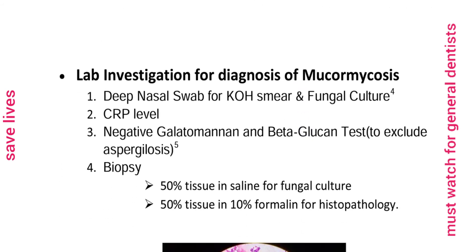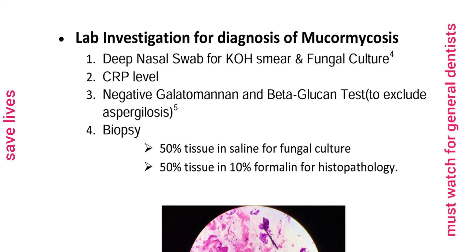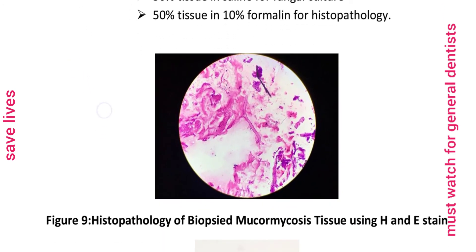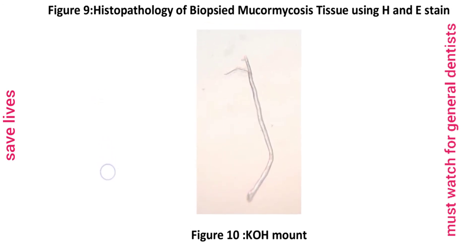Lab investigations for diagnosis of Mucormycosis include: deep nasal swab for KOH smear and fungal culture, CRP level, negative galactomannan and beta-glucan test to exclude aspergillosis, and ultimately biopsy — 50% tissue in saline for fungal culture and 50% tissue in 10% formalin for histopathology. Histopathology of biopsied Mucormycosis tissue using H&E stain and KOH mount are shown here.